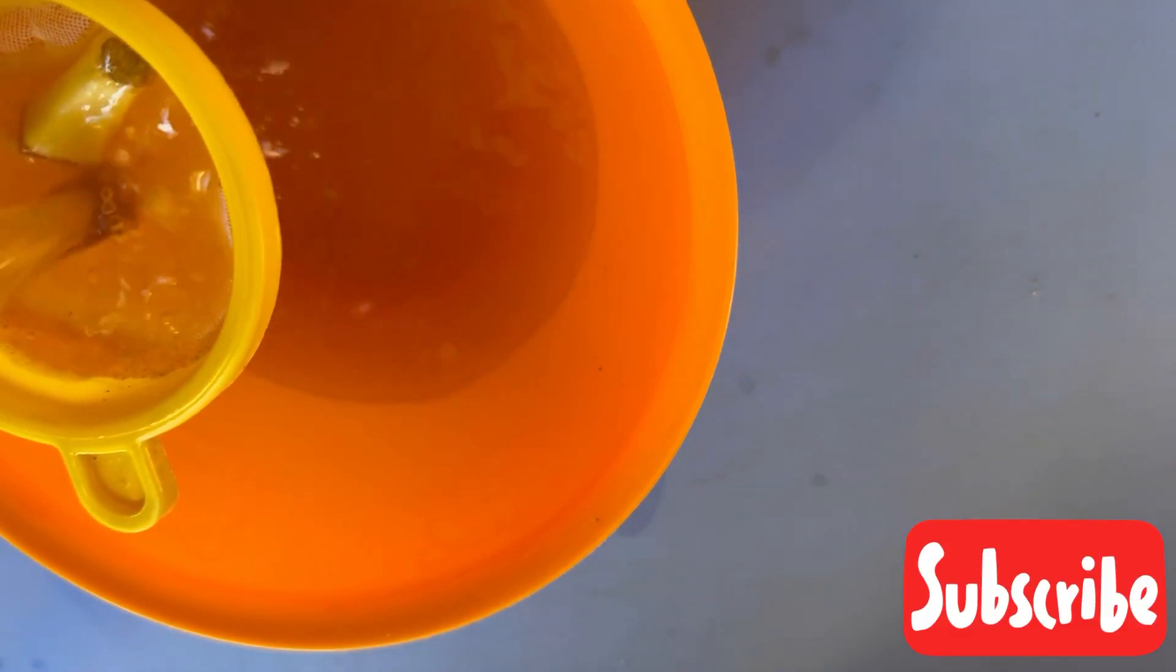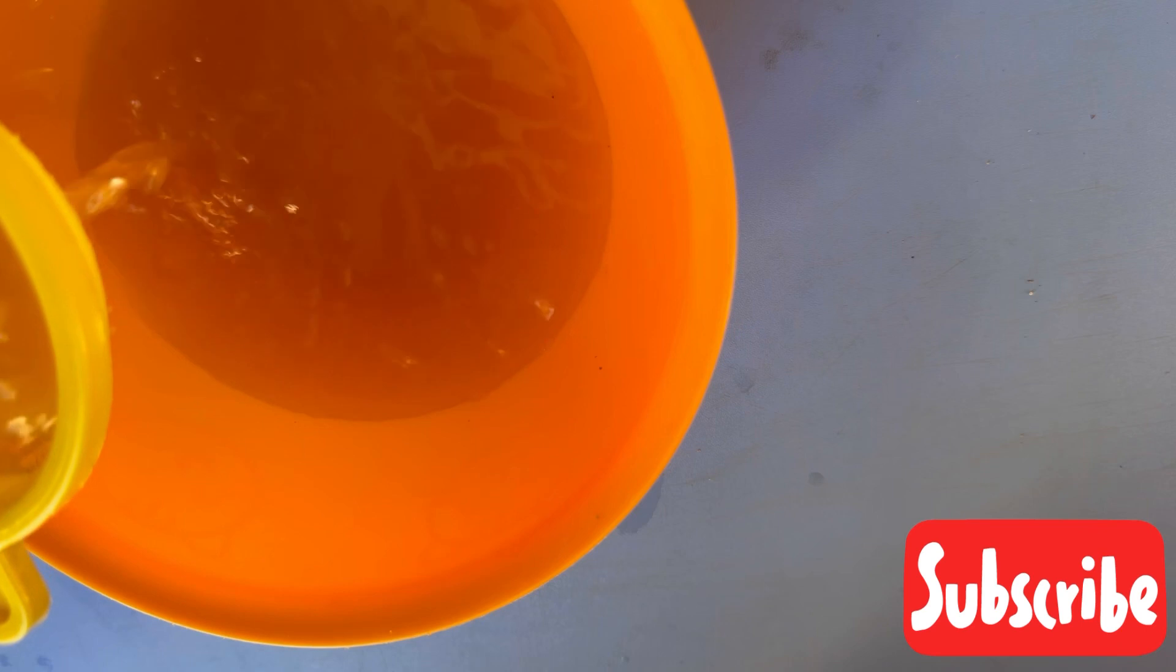So you just have to strain. Make sure you get your cloth or filter that looks like this, then you strain. Once you do that, you pour back into your bottle, you keep. Your apple cider vinegar is ready for use.